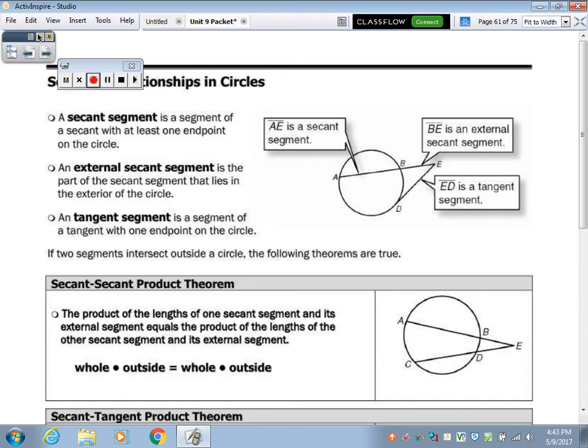Alright, so a secant segment. So a secant segment crosses through the circle once. So remember a secant line is a line that crosses the circle twice.